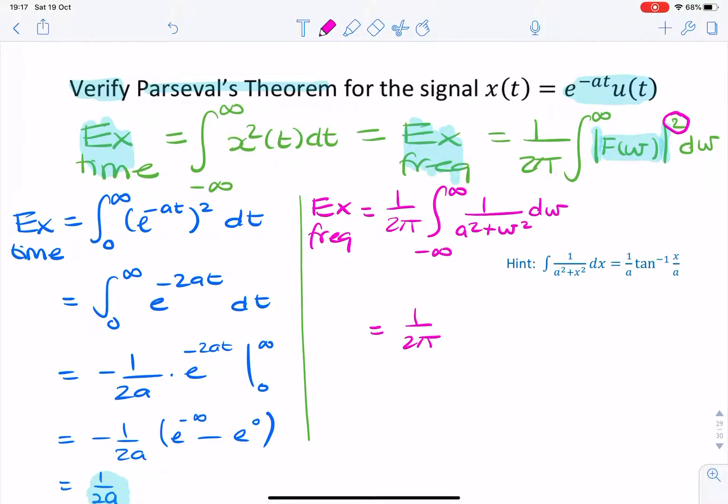And then I can now, obviously, the hint is giving us x. We're integrating over omega. So we simply have 1 over a tan inverse omega over a.